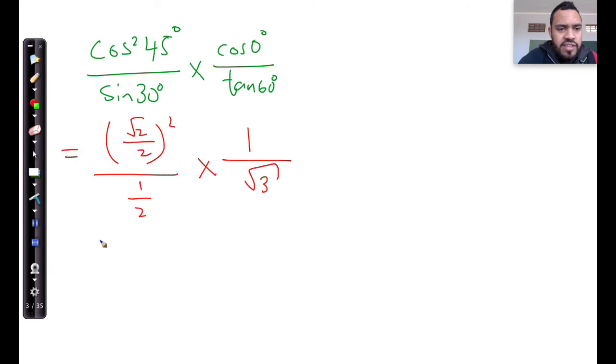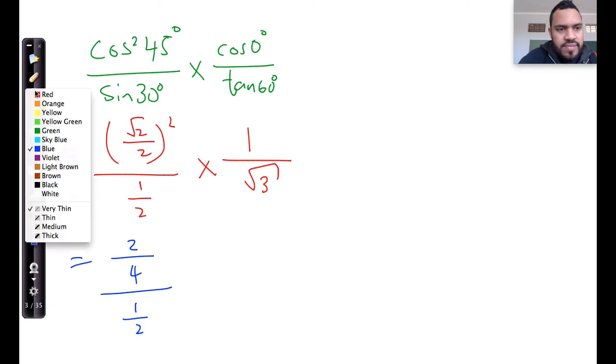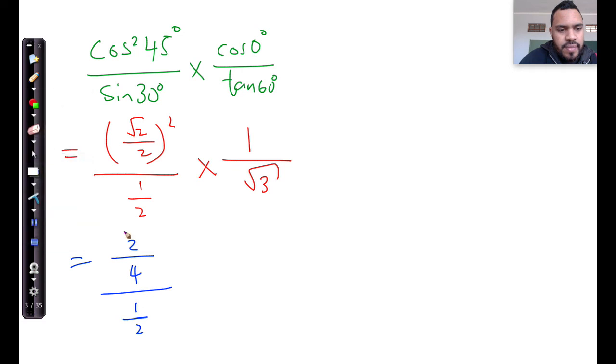Let's simplify that further. Root 2 squared, which is the numerator, is just going to be 2. Divided by 2 squared, which is going to be 4. And that's 2 over 4 divided by a half. You should be able to tell me that 2 over 4 is exactly the same as 1 over 2, right? Which I'm going to write there and simplify it. 2 goes in there once and 2 goes in there twice. So that's a half divided by a half.